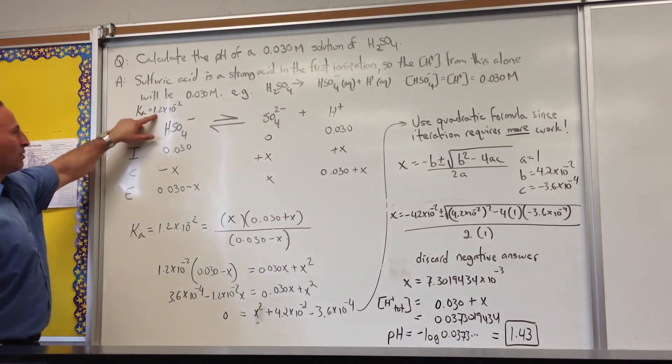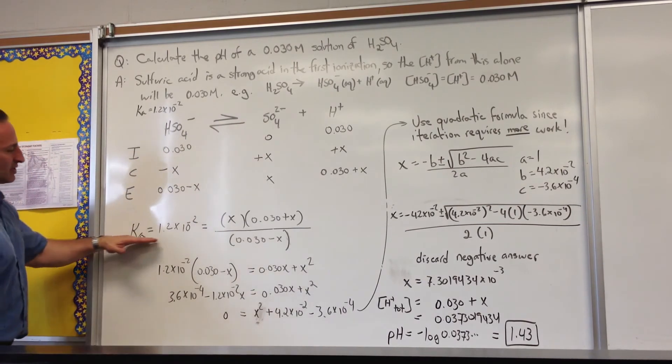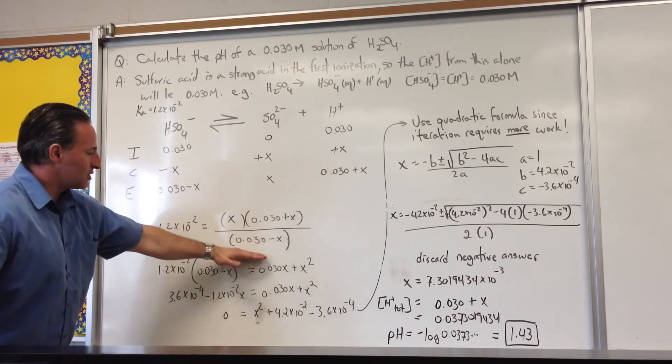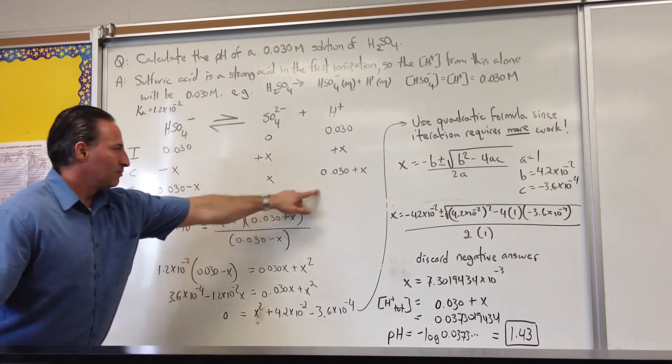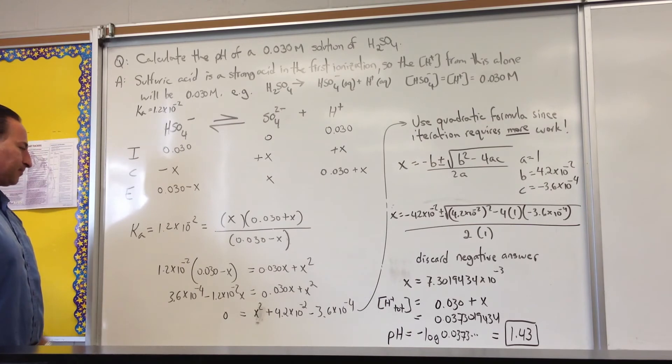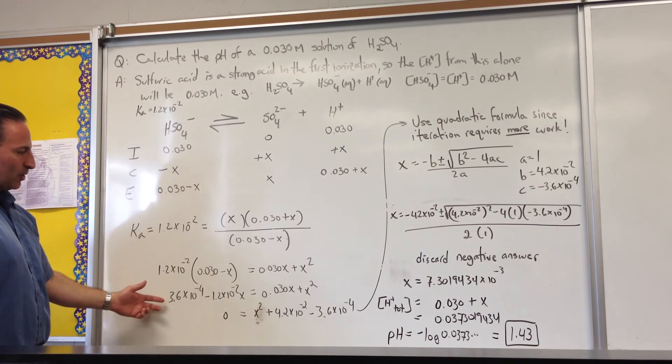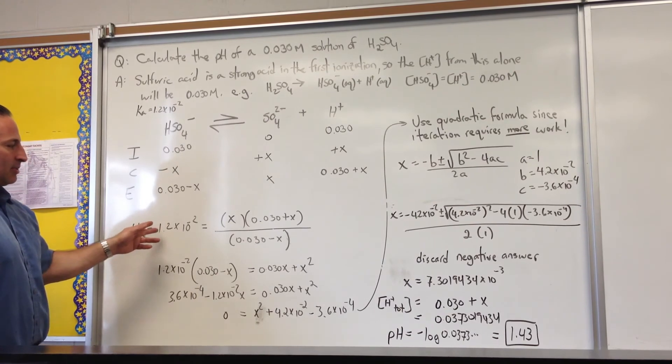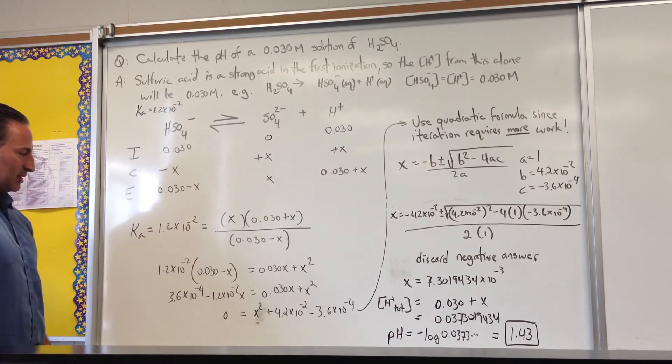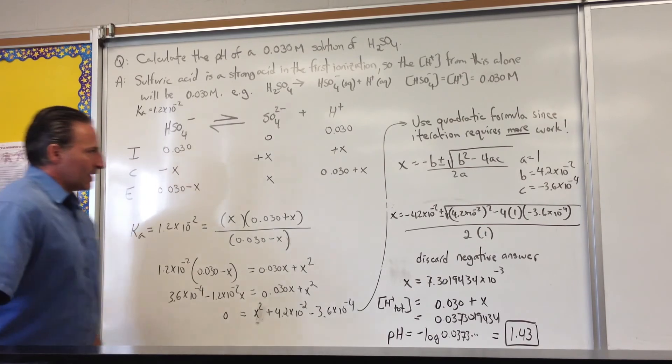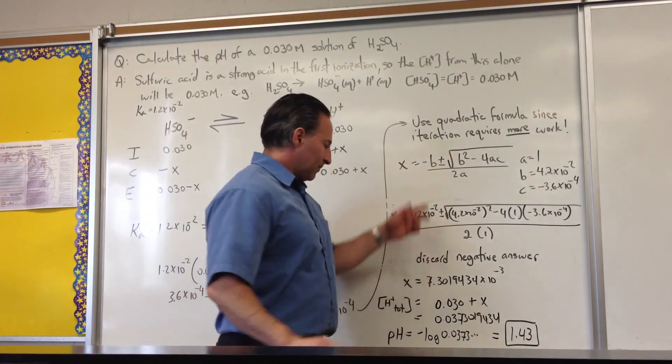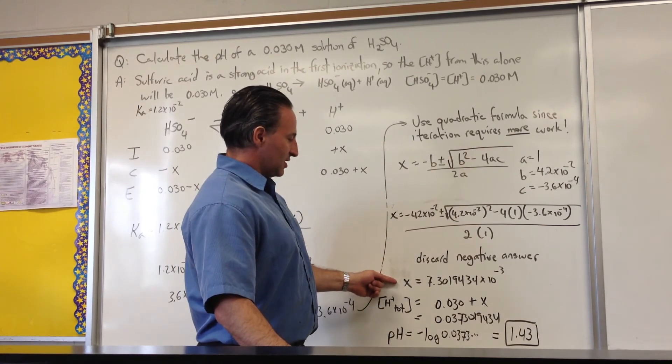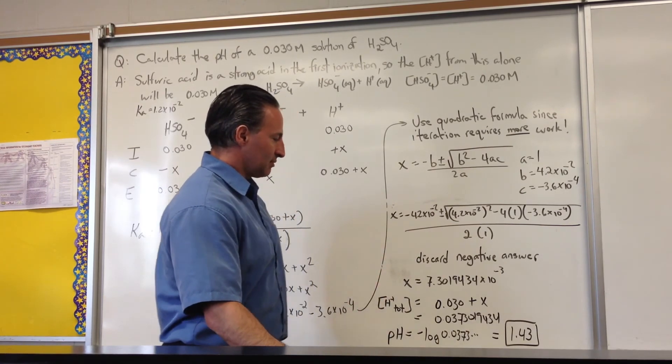The Ka of bisulfate is 1.2×10⁻². So we set up an equation showing the concentration of products over reactants, where we plug in all the equilibrium values to set up a trinomial. And again, it's best to use the quadratic formula for this type of problem, because the iterative method gets messy. We enter the values into the quadratic formula, we get two results, we discard the negative answer, and the result is X equals 7.3×10⁻³.